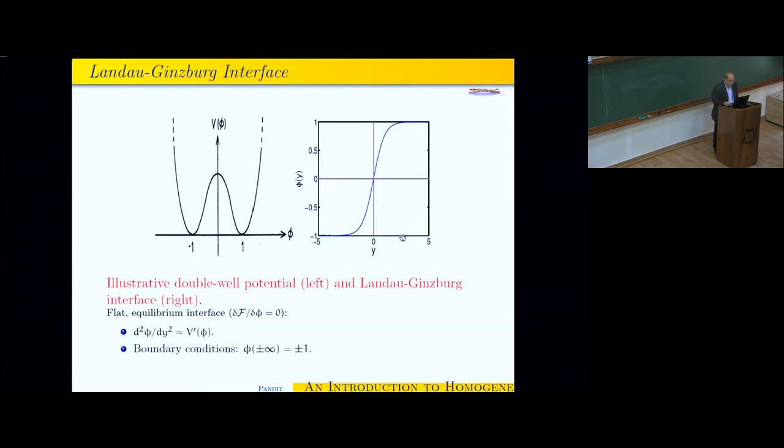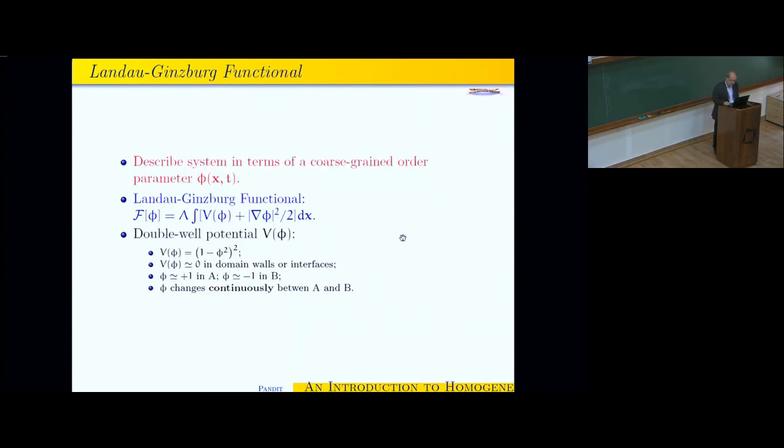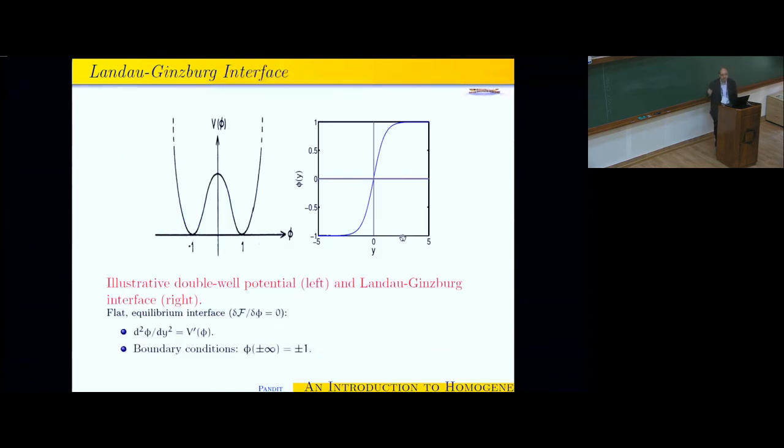Now let's allow for some spatial variation. In particular, let us say that at y equal to minus infinity, I impose that the fluid should be B-rich, and at y equal to plus infinity, it is A-rich. The analog of minimizing this, it's a very elementary exercise in a functional derivative. For the equilibrium interface, you take a functional derivative of f with respect to phi, so that it equals 0, you get a second-order differential equation, which, given the two boundary conditions at minus infinity and plus infinity, which are plus or minus 1, you can solve. And you get a tangent hyperbolic profile. For people in statistical mechanics, this is the simplest theory for the equilibrium interface.